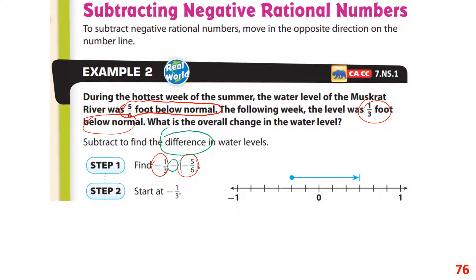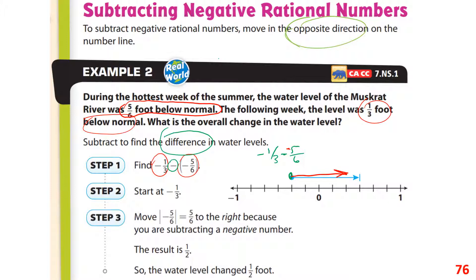We start at negative one-third. If we subtracted a positive five-sixths we'd move left, but since we're doing negative minus negative, we move in the opposite direction — to the right. Moving right, the result is one-half. So the water level changed by one-half foot.